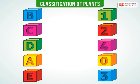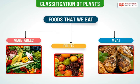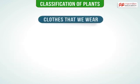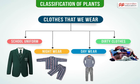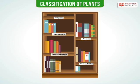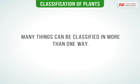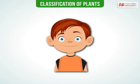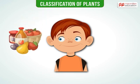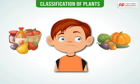For instance, we classify the foods that we eat. We classify the clothes that we wear. We also see books are classified in different types in a library. Many things can be classified in more than one way. You could have also classified the foods into foods that you like and foods that you do not like.